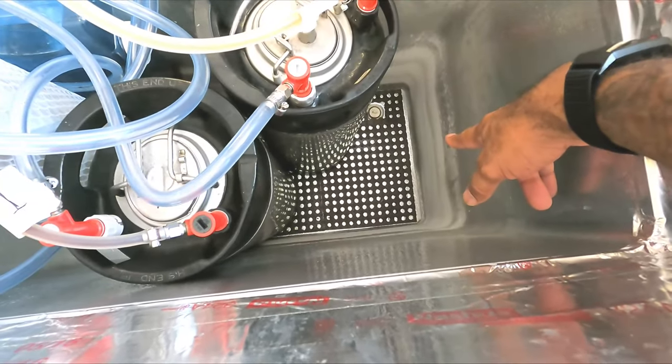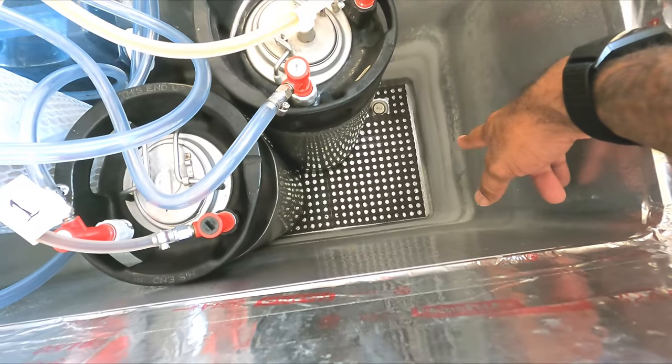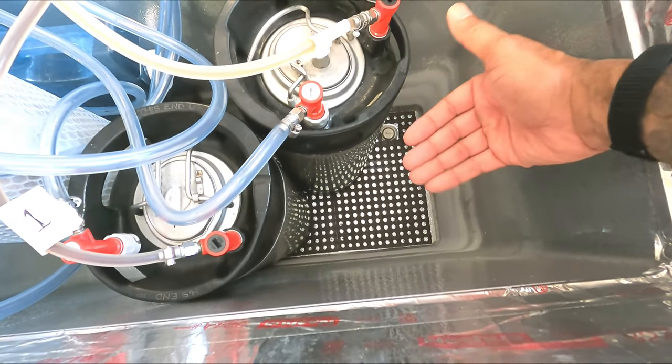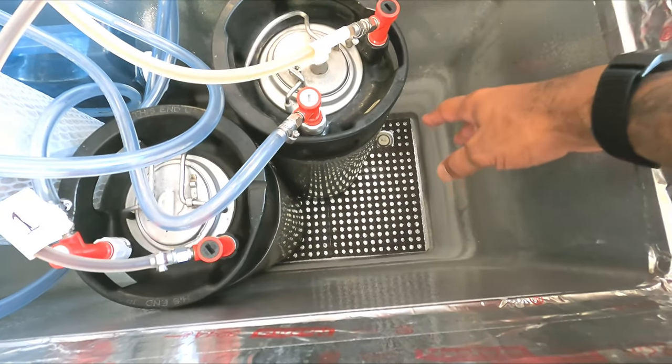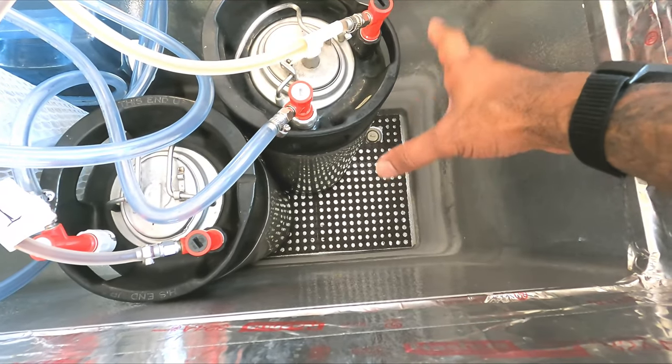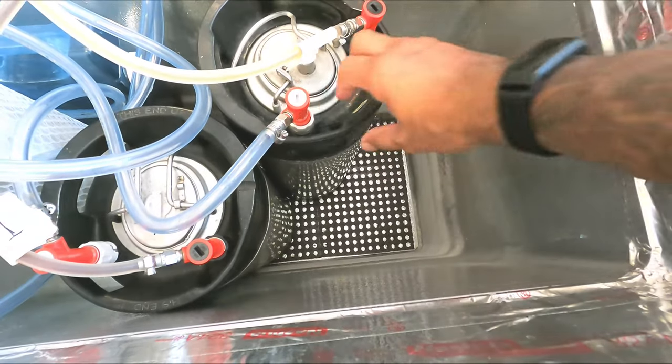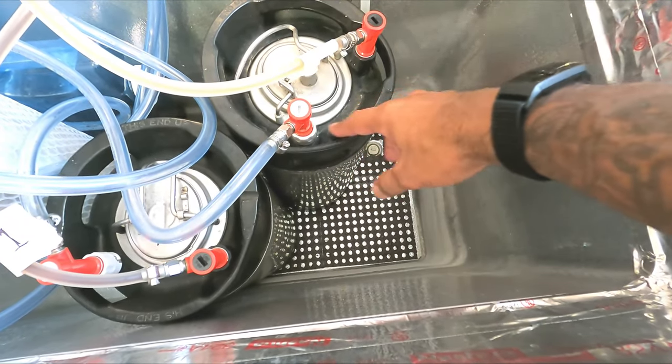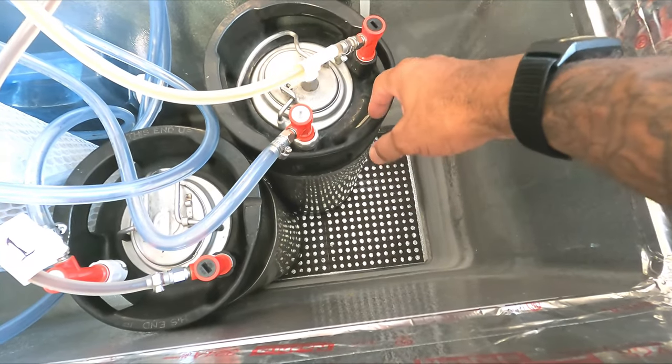Down here, that is just a plastic mesh that I cut to lift these kegs off of the actual bottom. It makes it so that whenever it starts to freeze down there, because you always get condensation in these keezer bars that freeze, that these don't actually get frozen to the bottom. It's easily allowing me to remove them when they go empty and everything like that.